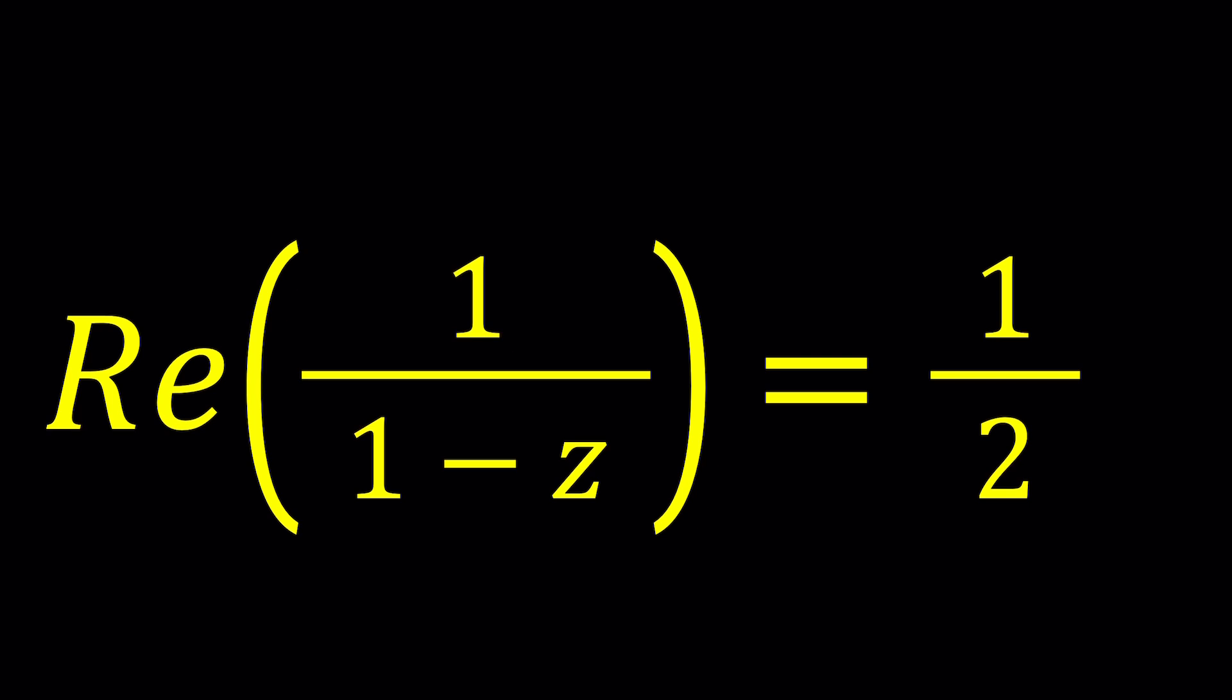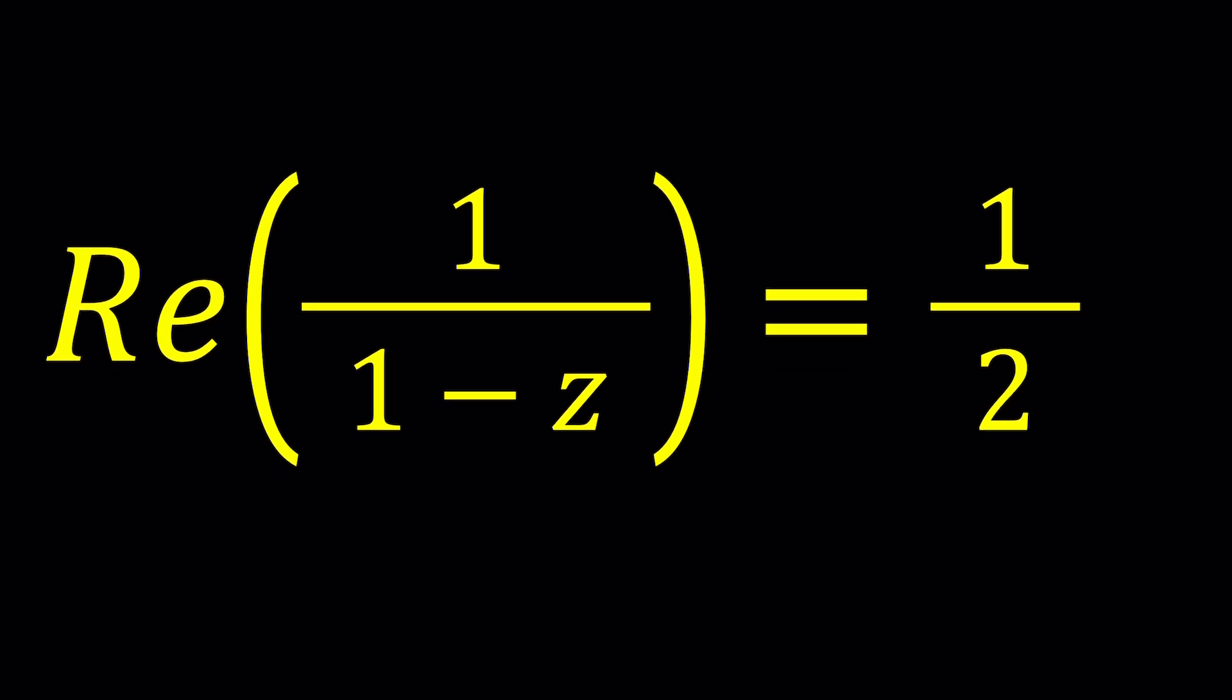Great, so we have an interesting scenario here. The real part of a complex number is equal to one half. So what is so special about it? It kind of reminds me of Riemann's conjecture about the real part being something like, I don't know, was it negative one half or one? Anyways, I couldn't remember. But that kind of reminded me of that.